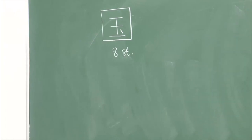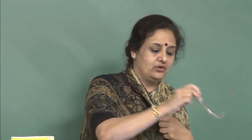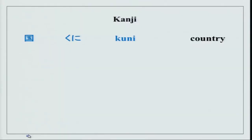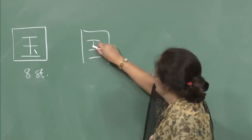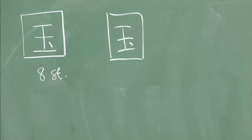How has kuni come into being? A king tries to keep all his treasures in a closed place — stands up and tries to protect all his treasures, thus country is closed. This is kuni. Let me show you once more: 1, 2, 3, 4, 5, 6, 7, and 8.